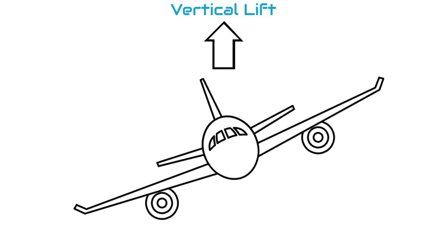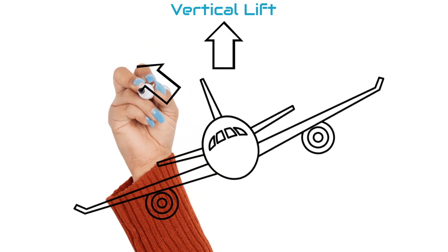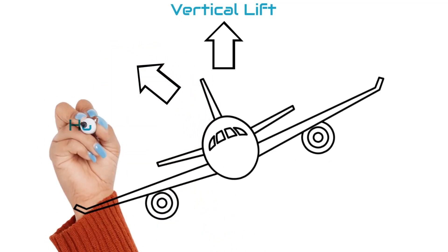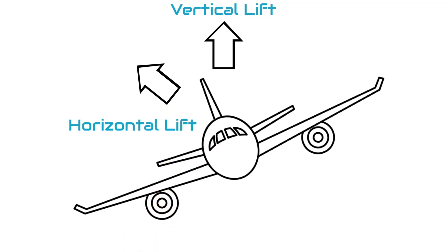When we roll the aircraft, we start producing some lift that moves laterally. This is called the horizontal component of lift, and it is what makes our airplane turn.